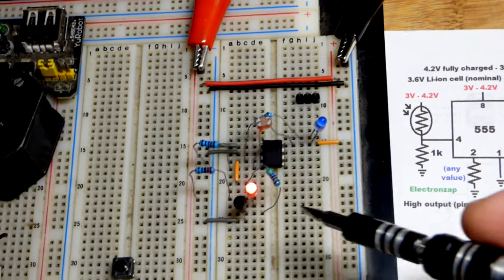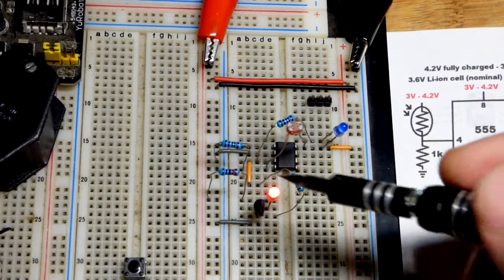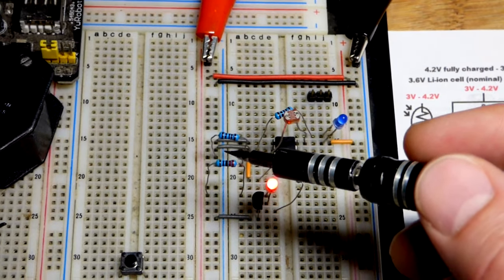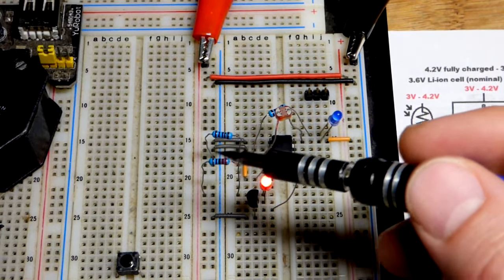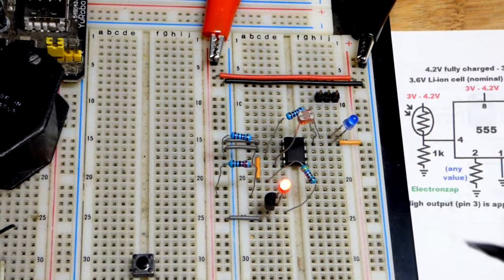We're only working with 3 volts, so the blue LED is not very bright. And the red LED needs a transistor to switch. There we go. We got pin number 2 there to the negative supply.